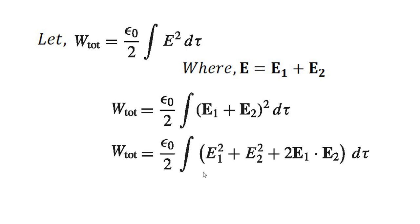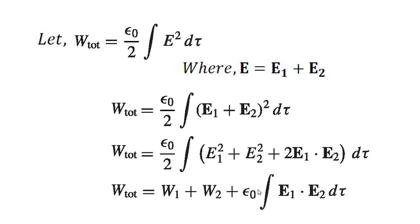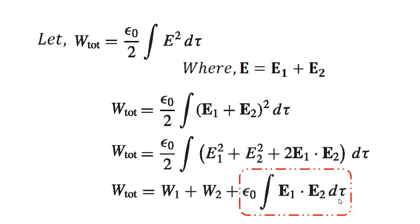Similarly, ε₀/2 times the integral of E₂² dτ gives W₂. There will be one extra cross term remaining. So the total energy of a system is not equal to the sum of the energies of its parts — confirming the cross term contribution.